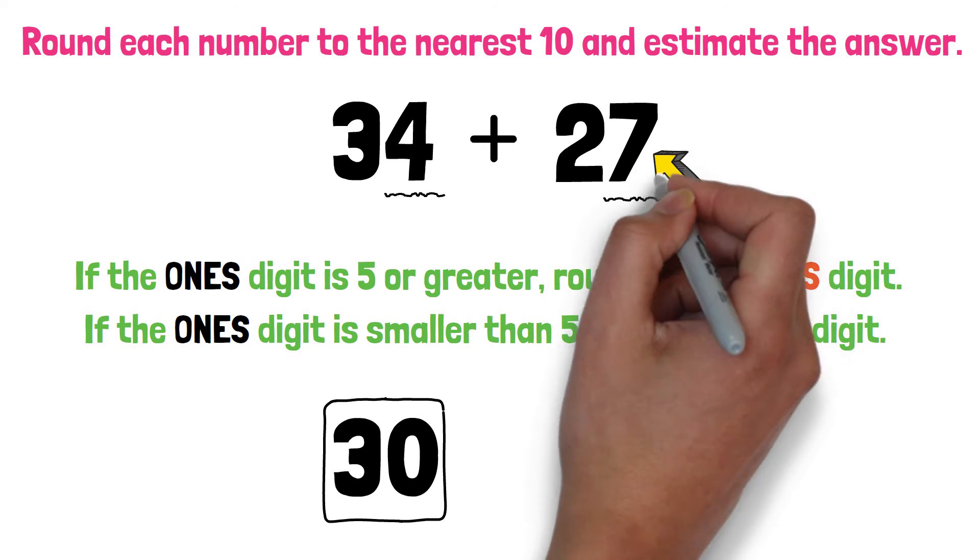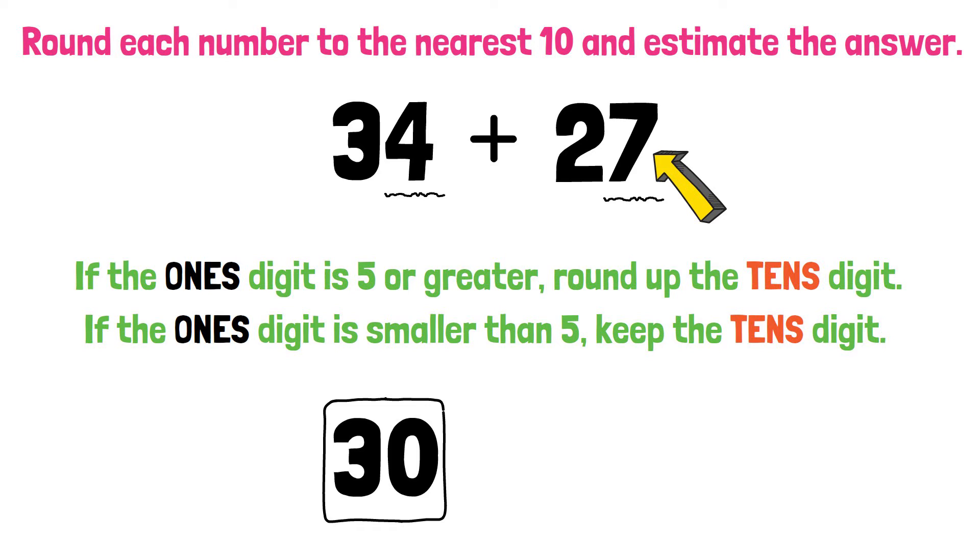For the number 27, the 1's digit is 7. What should we do? That's right. We must round up the 10's digit. 27 will round to 30.